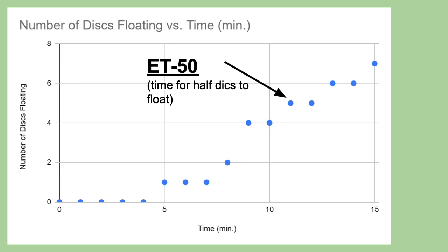So what's going to happen is a really good estimate for how well photosynthesis is doing is you can actually look at the rate of how long it takes for half of the disks to float. So if we had 10 disks, the half mark would be five. So what's going to happen is we are going to call this the ET50. In other words, it's the estimated time for 50% of the leaf disks to float.